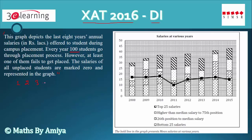First, understand what we mean by median salary. We have 100 students' data — first, second, third up to 50th, then 51st to 100th — and each student has a salary. The median is the value when we arrange all salaries in ascending order and take the middle term. The median value shows that 50 percent of people are below this number and 50 percent are above it.